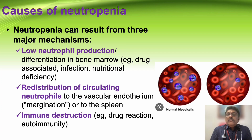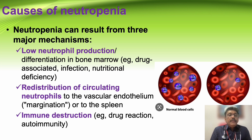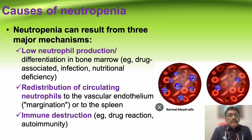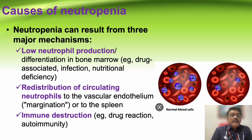When neutrophil counts are reduced, it produces a reduction in total body immunity — we call this neutropenia. There are three important mechanisms: low neutrophil production from bone marrow due to bone marrow failure, drug-induced suppression, infections, nutritional deficiency like vitamin B12 or folic acid, or marrow infiltration.